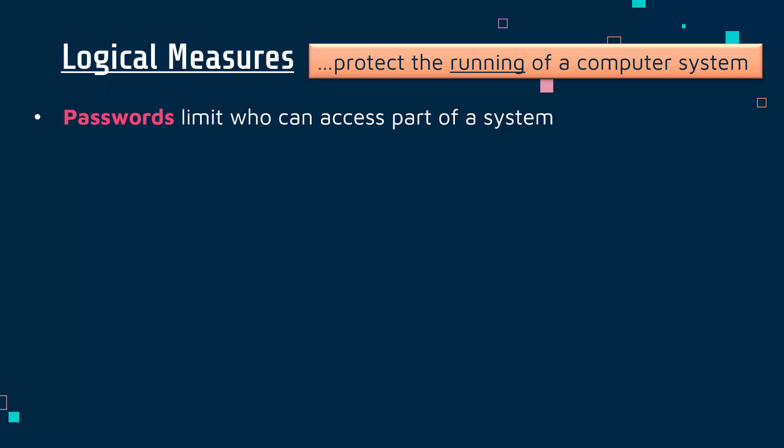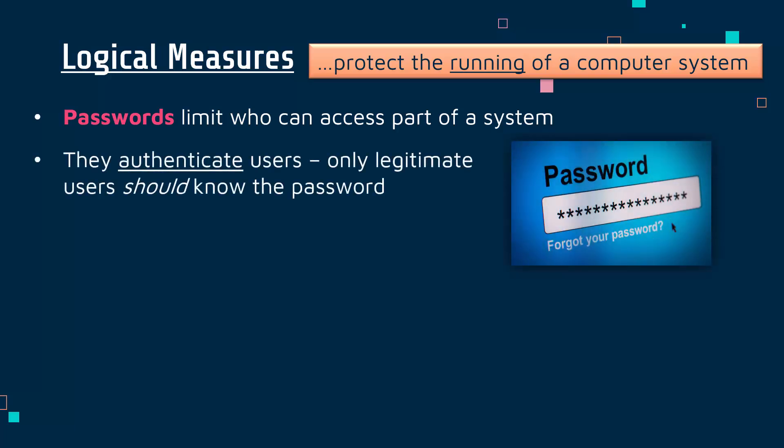A really obvious, but good, example of a logical measure is a password. Passwords are there to limit who can access parts of a system. A password — being a string of characters, which could just be a word, or a mix of letters, numbers, and symbols — means that only a few people, or ideally one person, will know it, and so only that person or small group of people are able to gain access. The purpose of a password is to authenticate. Authentication means checking to see if somebody is who they say they are. A password authenticates people because only legitimate users should know the password. If it's unique to one user, only that user should be able to gain access.